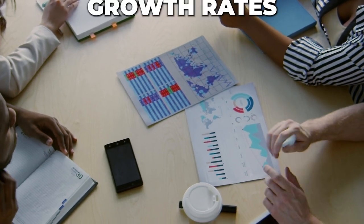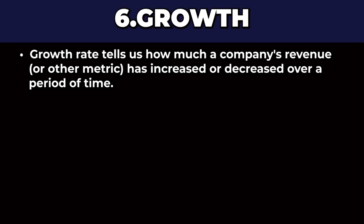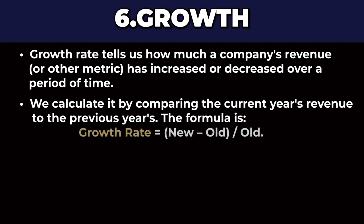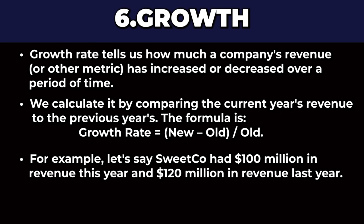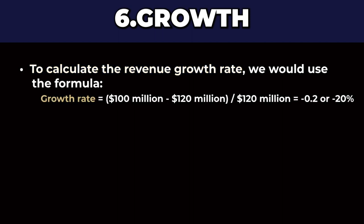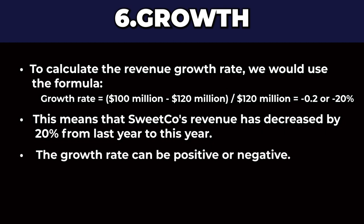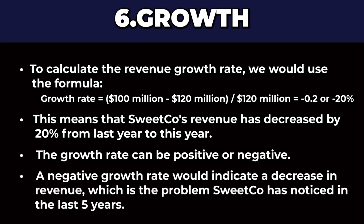The sixth and final case math formula is the growth rate, which tells us how much a company's revenue or other metrics has increased or decreased over a period of time. The formula is: Growth Rate = (New Metric − Old Metric) ÷ Old Metric. For example, if Sweetco had $100 million in revenue this year and $120 million last year, Growth Rate = ($100M − $120M) ÷ $120M = −20%, meaning revenue decreased by 20%. A growth rate can be positive or negative — a negative growth rate in cost could actually be a positive sign, so whether a negative or positive number is good depends on the metric you're measuring.